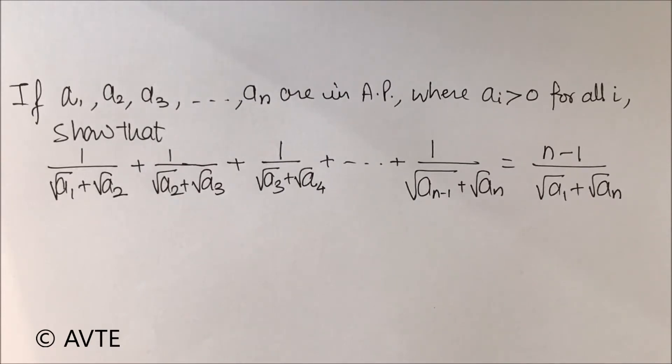1/(√a₁ + √a₂) + 1/(√a₂ + √a₃) + 1/(√a₃ + √a₄) and so on up to 1/(√aₙ₋₁ + √aₙ) equals (n-1)/(√a₁ + √aₙ).